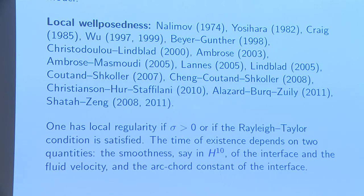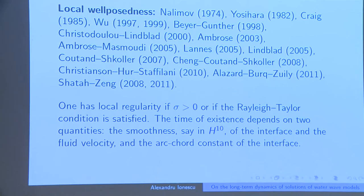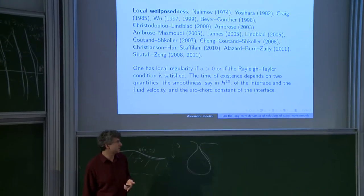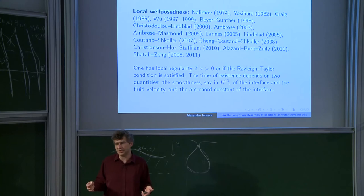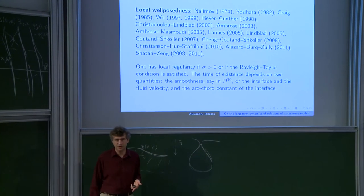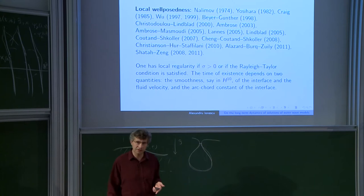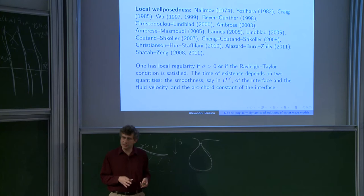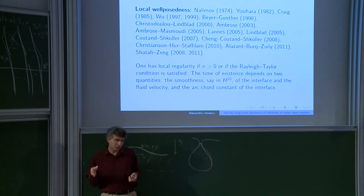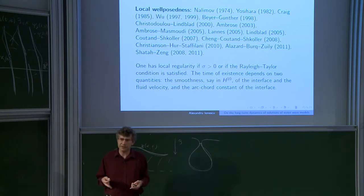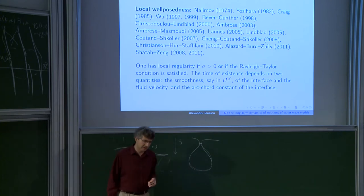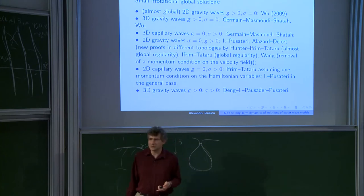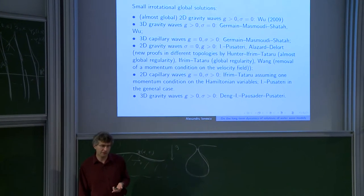Most of the work after 2011 has to do with reducing the regularities — instead of thinking of objects in H^10, they would be in a lower Sobolev norm. One could try to reduce regularity as far as possible. On the other hand, this is a quasi-linear problem. In none of these problems is it likely one can get to the critical regularity, so it's probably not possible to prove well-posedness at the critical regularity.